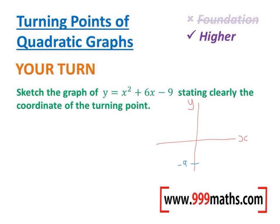OK, so here goes. So its minimum point is minus 9. We need to complete the square now to work out the turning point. Start by halving the middle number. Half of plus 6 is plus 3. 3 squared is 9, so take away 9. And then don't forget the other take away 9 as well.